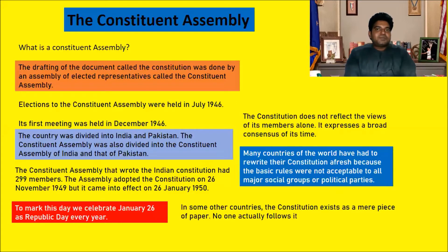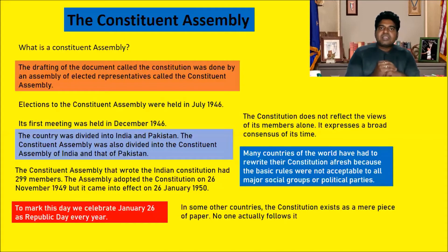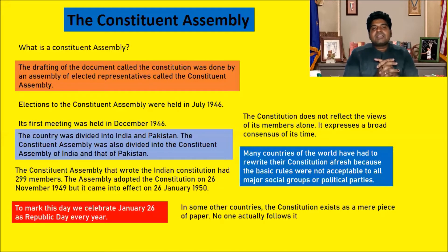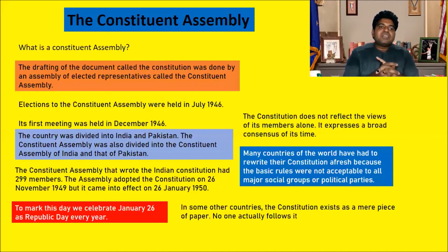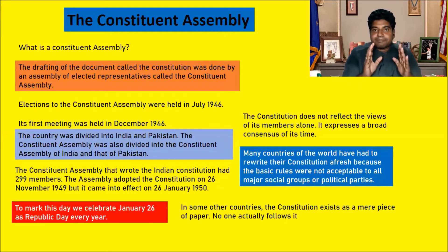The Constituent Assembly that wrote the Indian Constitution had 299 members, and they worked tirelessly for exactly 2 years, 11 months, and 18 days. After three years of continuous debates, suggestions, and amendments, the Constitution was finally adopted on 26th November 1949.